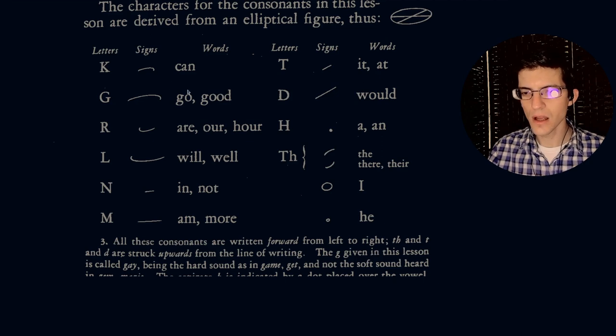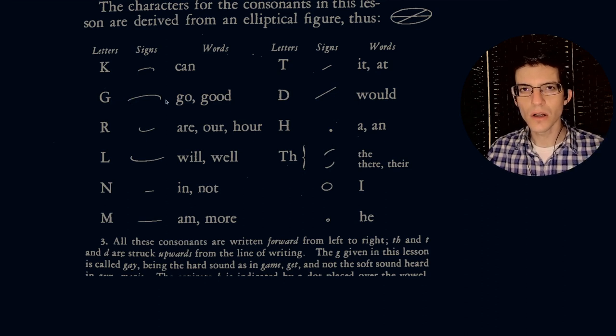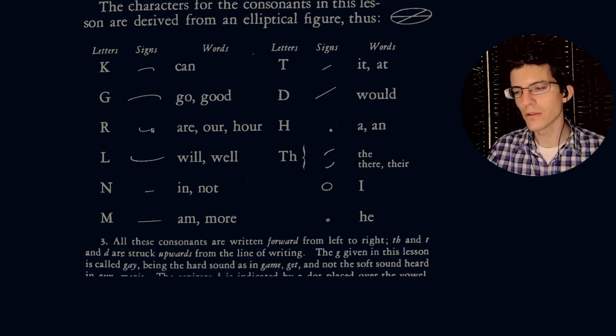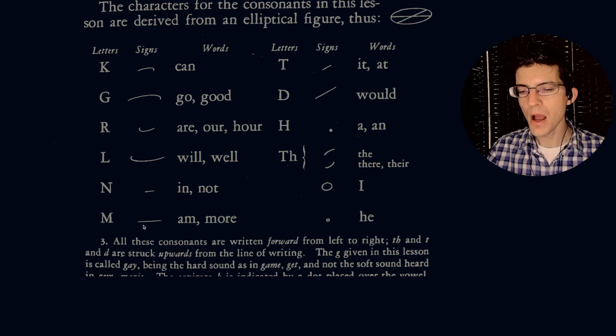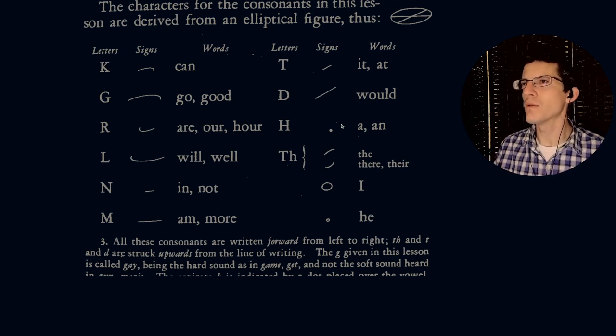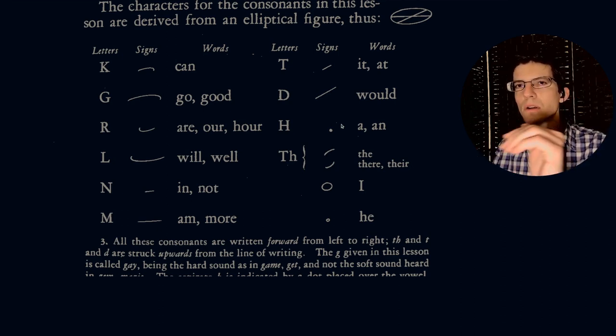And what are those characters? We have the sounds K and G, and that is a short stroke, a short upper portion of the ellipse. And then G is a long upper portion of the ellipse. R is the lower portion of the ellipse, a smaller version. And L is a longer lower portion of the ellipse.